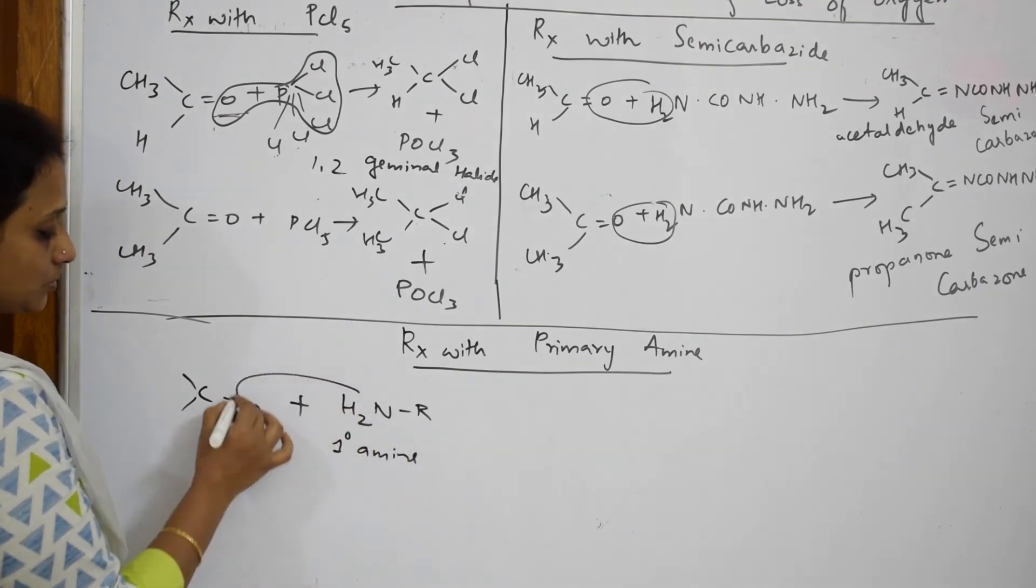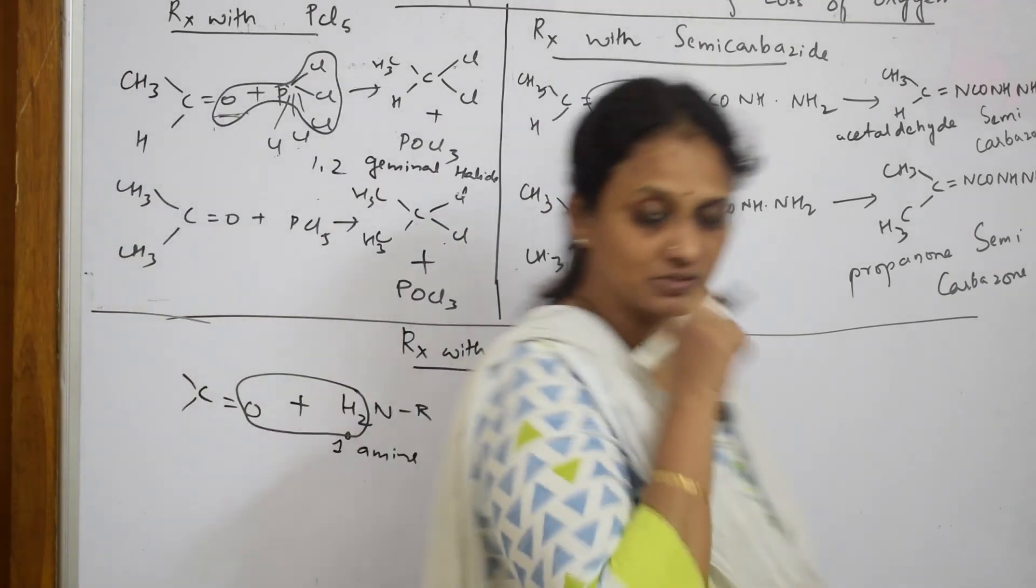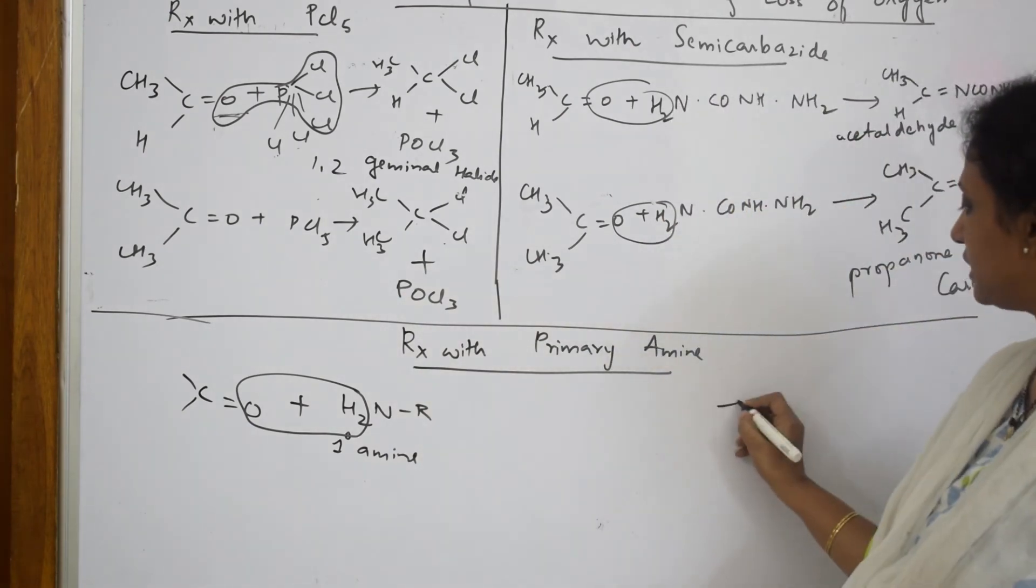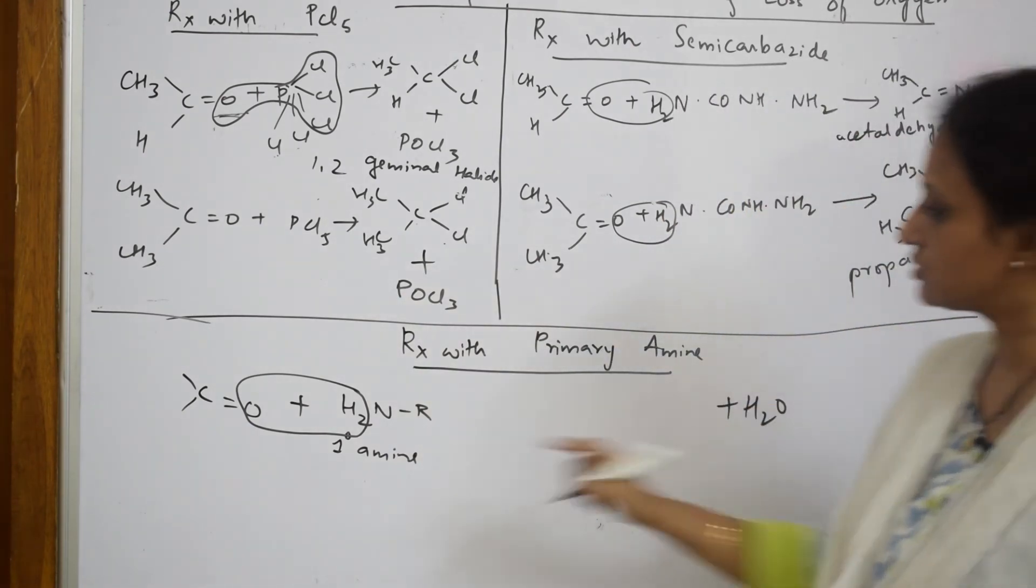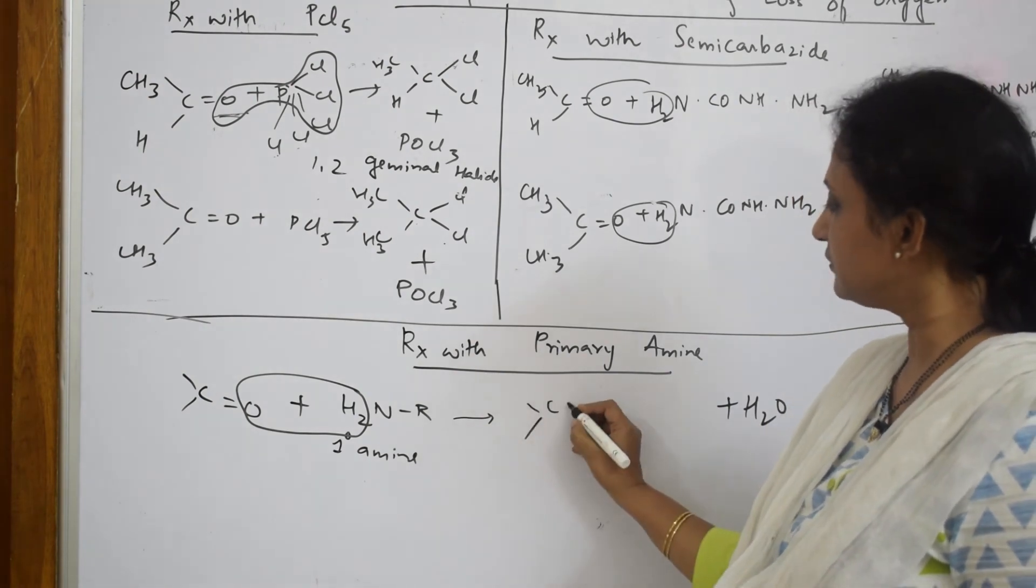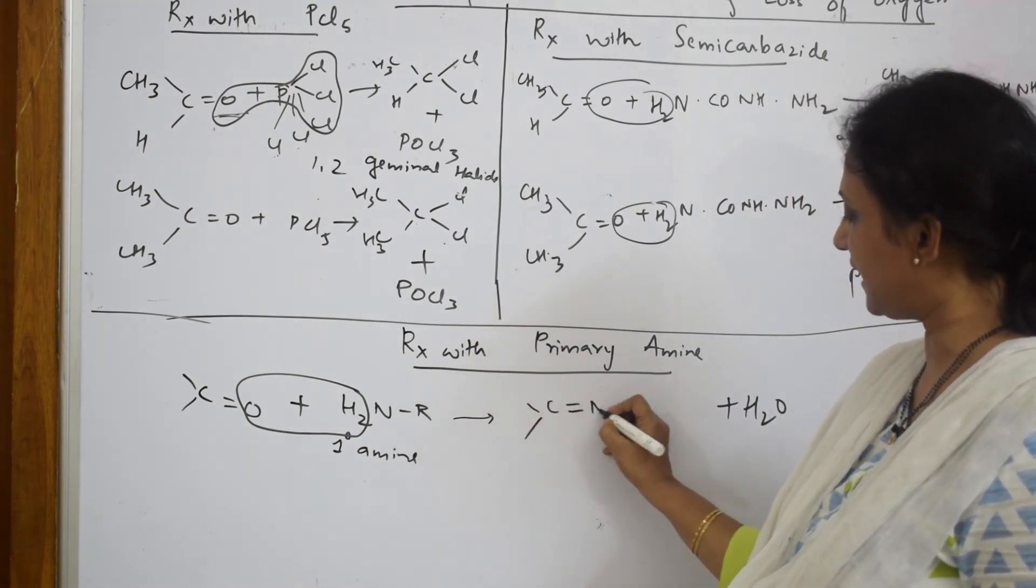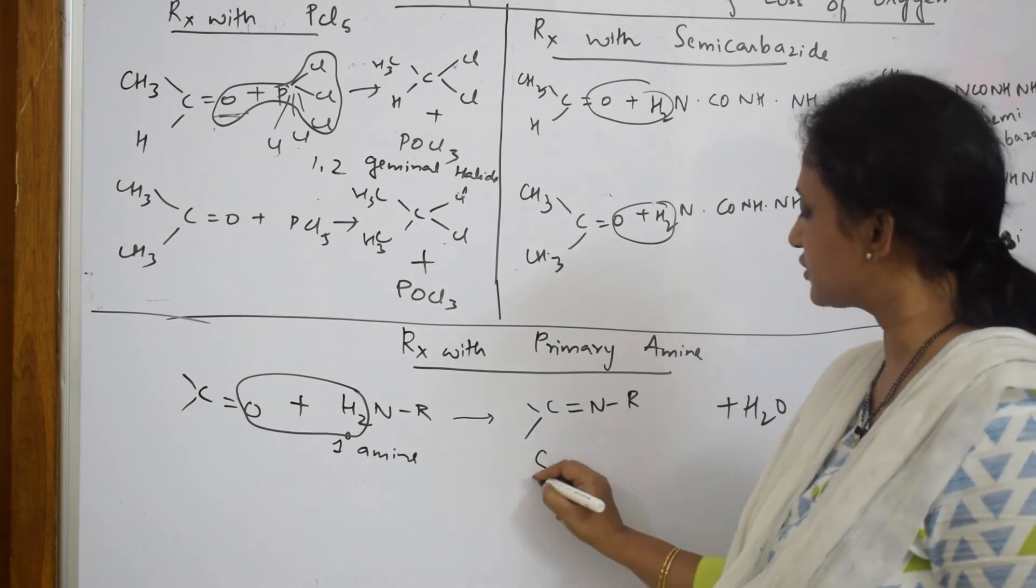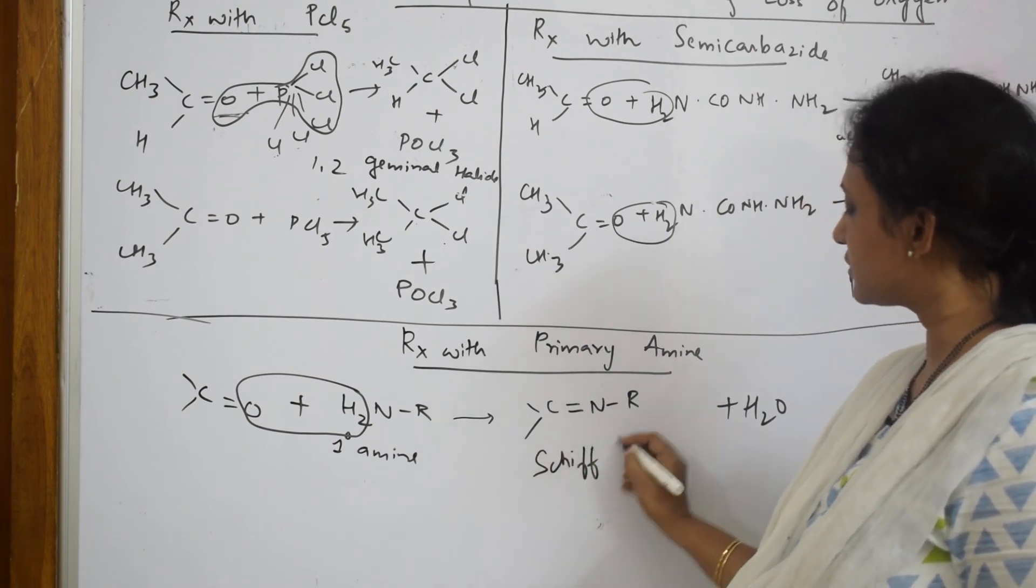Hope you understood the semi-carbazone. With primary amine, suppose I am going to take a carbonyl compound like this. I am going to introduce a primary amine, NH2. Nitrogen with one alkyl group and two hydrogens is primary amine. So let us write primary amine. Now what happens? Your water molecule is eliminated because these reactions are involving elimination of oxygen, water. So what else is left? Your carbonyl group with your double bond N and R. This is your Schiff's base.